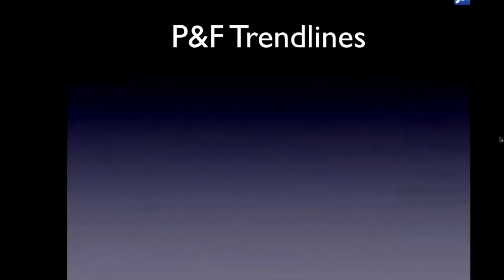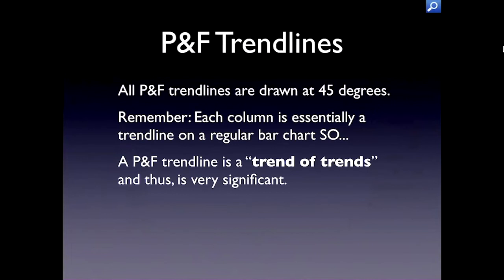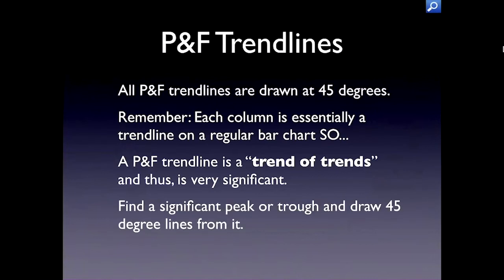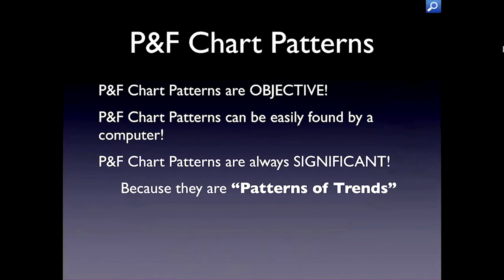Trend lines on PNF charts are drawn at 45-degree angles and can be drawn automatically by the computer. Keep in mind that each vertical bar on a PNF chart is itself a trend line on a bar chart — so a PNF trend line is really a trend of trends. That's pretty significant. It's really useful to know if the trend of trends is increasing or decreasing. You find a peak or trough and draw a 45-degree line from it until it runs into the chart again.